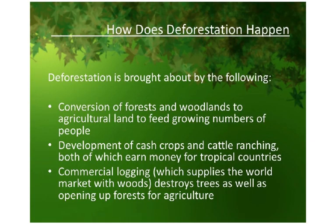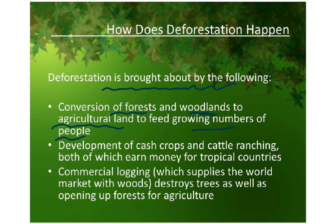Coming to the topic of deforestation — how does deforestation happen? Deforestation is brought about by certain reasons. Number one: you cut down forests and woodlands because you want to have agricultural land to feed the growing numbers of people. The forests may just have trees providing wood — like pine trees or oak trees — with no fruit. So you convert forests to agricultural land to plant rice, wheat, or sugarcane. Then there is development of cash crops and cattle ranching — cattle farms, goat farms, dairy farms, and poultry farms — which can earn money for tropical countries. Then commercial logging, which supplies the world market with wood, destroys trees and also opens up forests for agriculture.